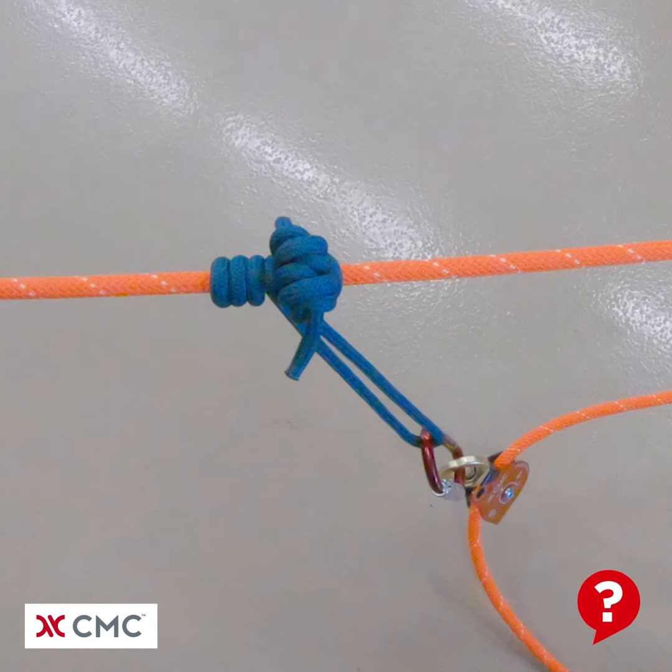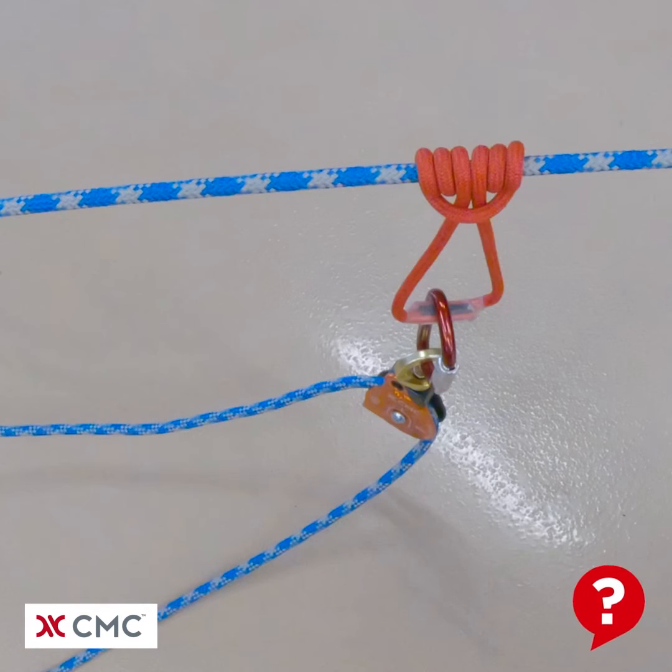The second rope system that would function as the other half of the twin tension system or the belay line has been purposely left out for clarity in this video.